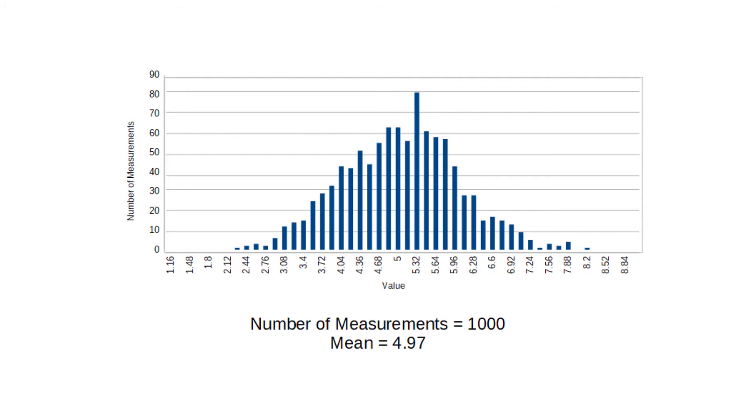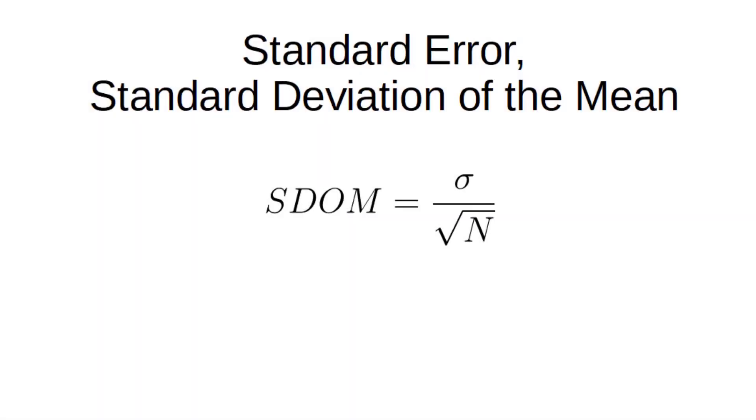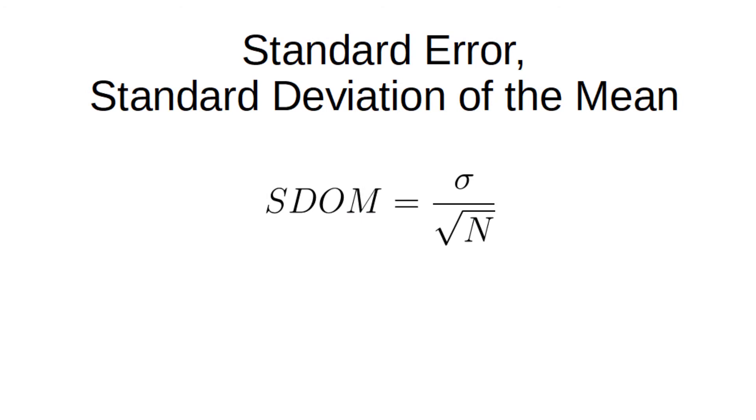We can, however, calculate the uncertainty in our average by dividing the standard deviation by the square root of the number of measurements. In many disciplines, this is called the standard error or standard deviation of the mean.